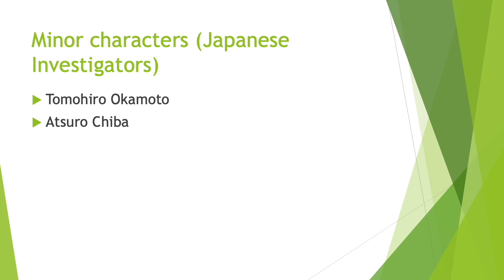Tomohiro Okamoto is an official from the maritime department of the Japanese Ministry of Transport who is investigating the sinking of the Japanese vessel Tsimtsum. Together with his assistant, he interviews Pi and is skeptical of Pi's first account of his ordeal. Atsuru Chiba is Okamoto's assistant — the more naive and trusting of the two Japanese officials. Chiba agrees with Pi that the version of his ordeal with the animals is the better story.